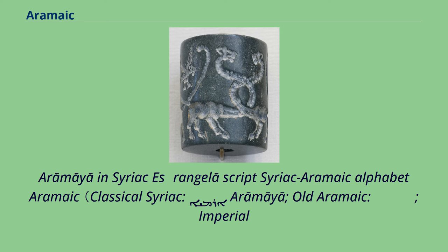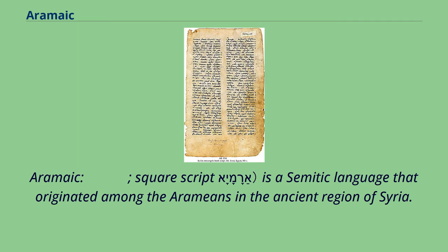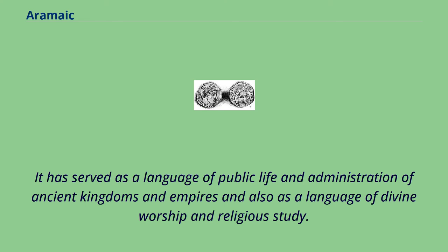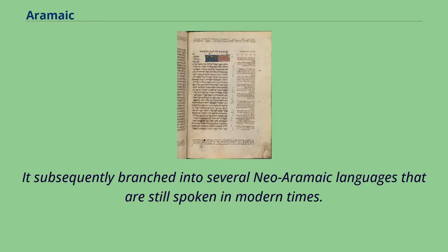Aramaic is a Semitic language that originated among the Aramaeans in the ancient region of Syria. During its 3,000-year-long history, Aramaic went through several stages of development. It has served as a language of public life and administration of ancient kingdoms and empires, and also as a language of divine worship and religious study. It subsequently branched into several Neo-Aramaic languages that are still spoken in modern times.